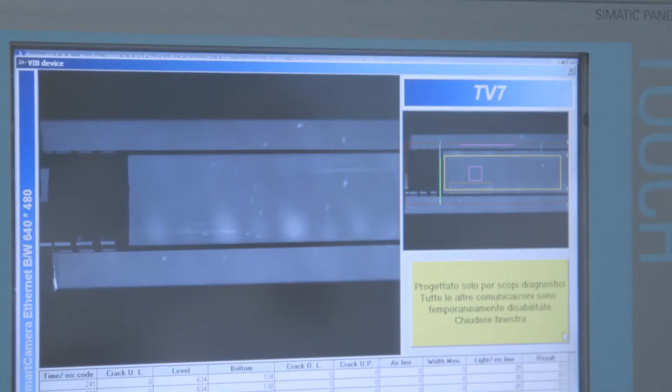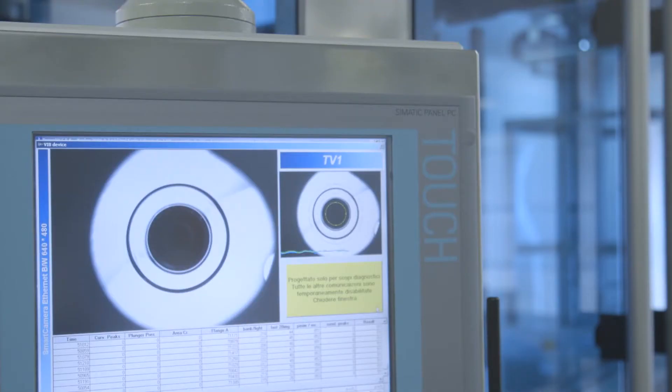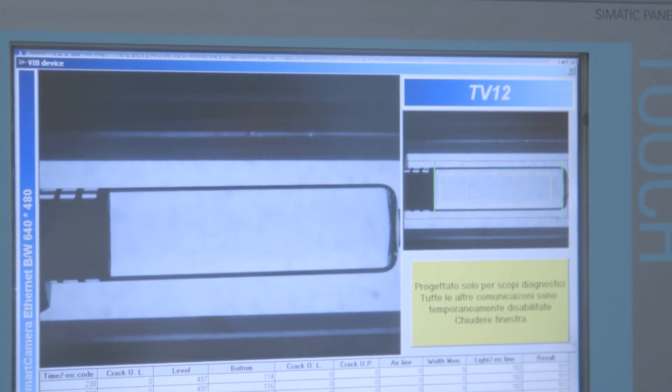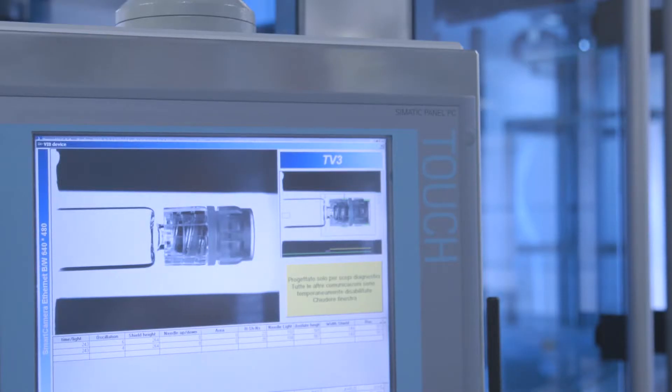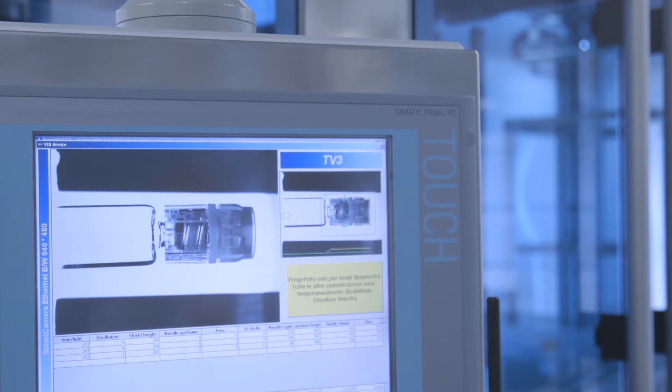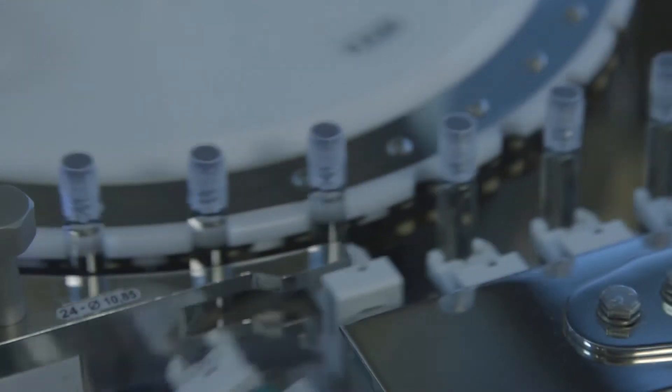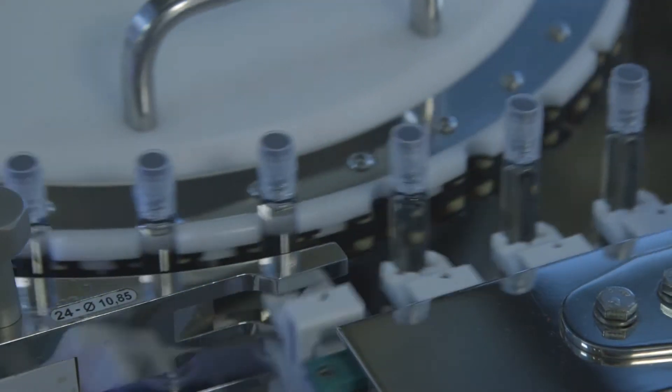Another seven cameras inspect them for the presence of particles. The vision system makes use of polarized light to detect the reflecting particles and non-polarized light for the darker particles. Cameras are able to identify defects like fibers, glass fragments, stuck particles, cracks, and scratches of size about 10 microns.